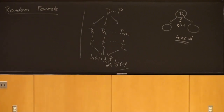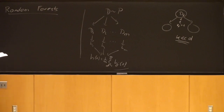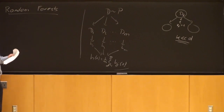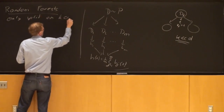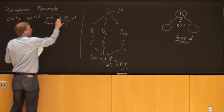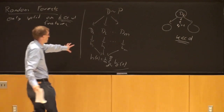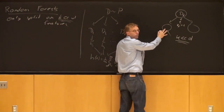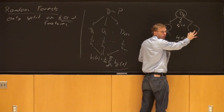Random forests is one of my favorite algorithms. The important thing is that you only split on k < d features. For every single split you sample k features afresh — so every time you split, you pick k features at random and find the best split among those. Then at the next node you again pick k features at random and find the best split.